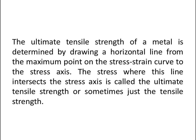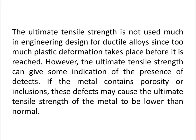The ultimate tensile strength is determined by drawing a horizontal line from the maximum point on the stress-strain curve to the stress axis; the stress where this line intersects the axis is called the ultimate tensile strength, or simply the tensile strength. The ultimate tensile strength is not used much in engineering design for ductile alloys, since too much plastic deformation takes place before it is reached. However, it can give some indication of defects — if the metal contains porosity or inclusions, these defects may cause the ultimate tensile strength to be lower than normal.